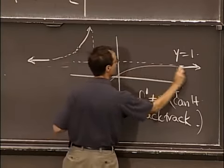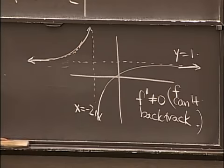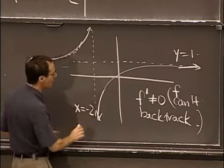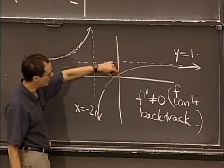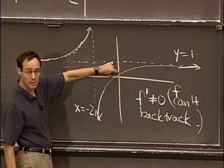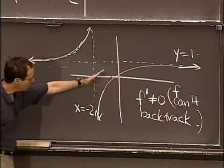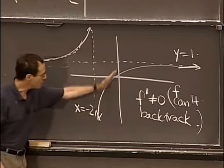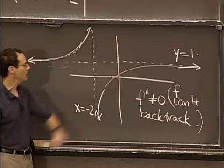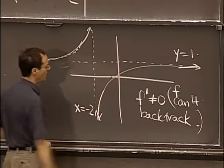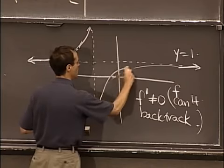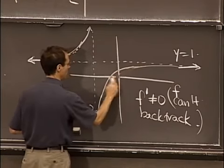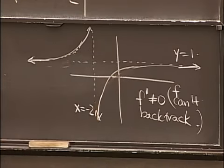So that means it doesn't look like a dip — it just goes smoothly like this. That's basically the end of the problem. It goes like this. You can decorate your sketch if you want — you may notice where it crosses the axes, and you can evaluate those places. We're looking right now for qualitative behavior.